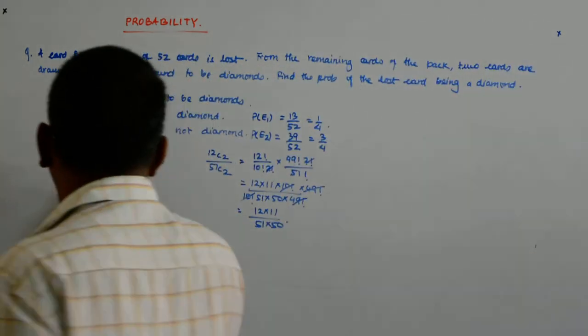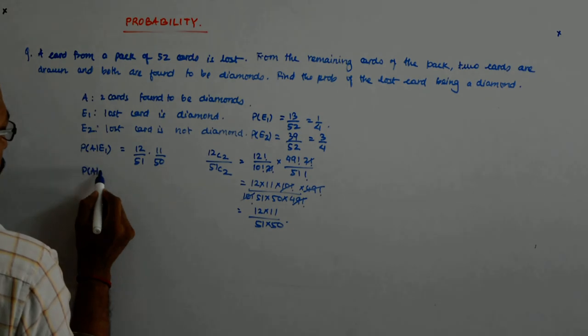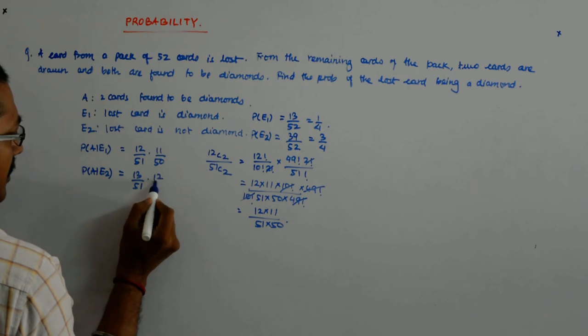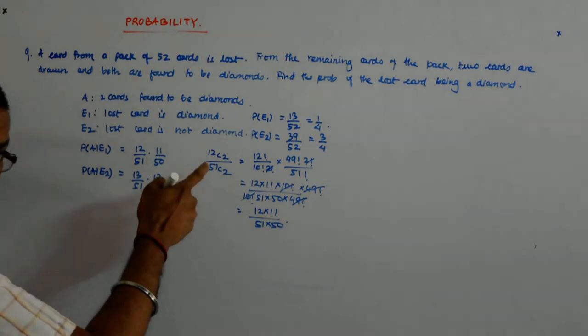So what is the probability of drawing two diamonds such that a diamond is not lost? 13 upon 51 into 12 upon 50, or you can do it by this method also.